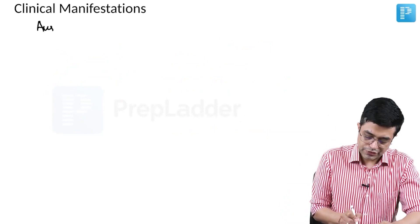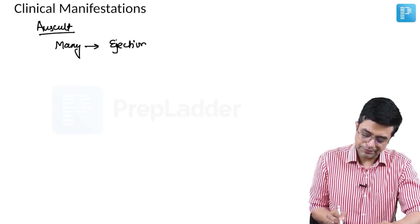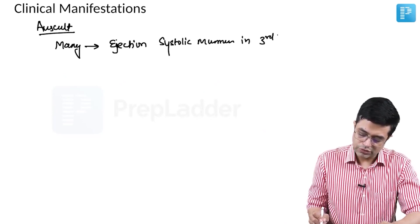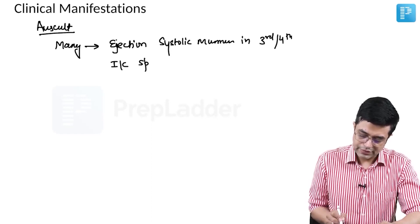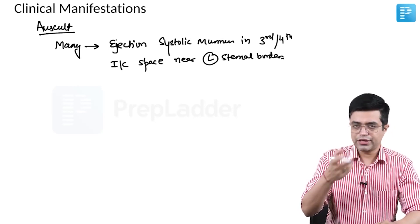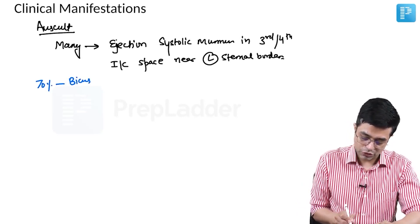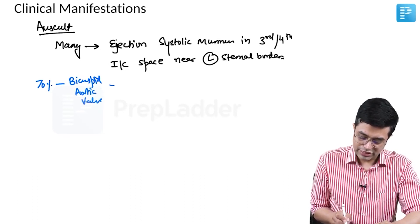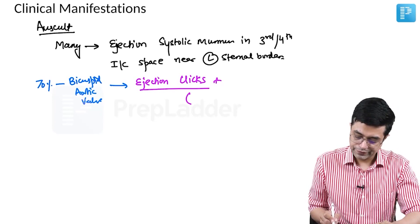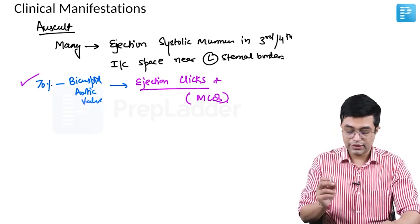On auscultation, many patients will have an ejection systolic murmur in the third or fourth intercostal space near the left sternal border, due to turbulence from the narrowing. As 70% of patients also have a bicuspid aortic valve, those patients will additionally show ejection clicks. This is a potential MCQ point: ejection clicks in coarctation of aorta indicate an underlying bicuspid aortic valve, which by itself is usually silent.